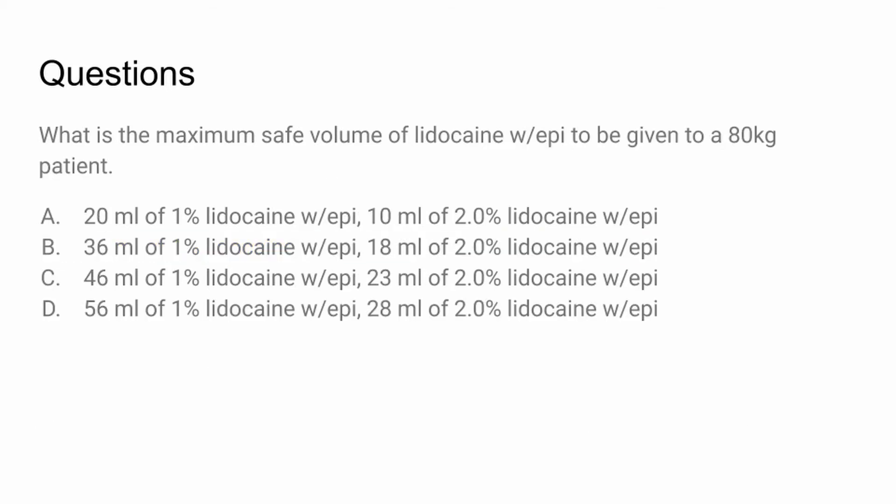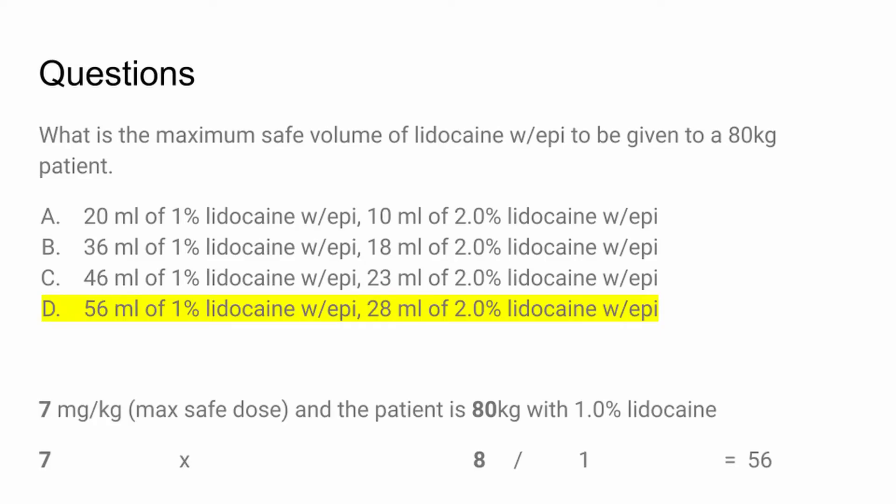Next question: what is the maximum safe volume of lidocaine with epinephrine for an 80 kilogram patient? We follow the same procedure but recall that lidocaine with epinephrine allows 7 mg/kg. So we multiply 7 × 8 (weight divided by 10) and divide by 1 — giving 56 milliliters of 1% lidocaine with epinephrine. Or for 2% lidocaine with epinephrine, that's 28 milliliters.